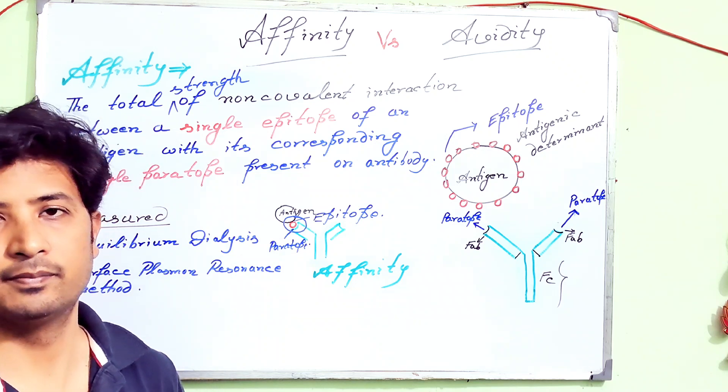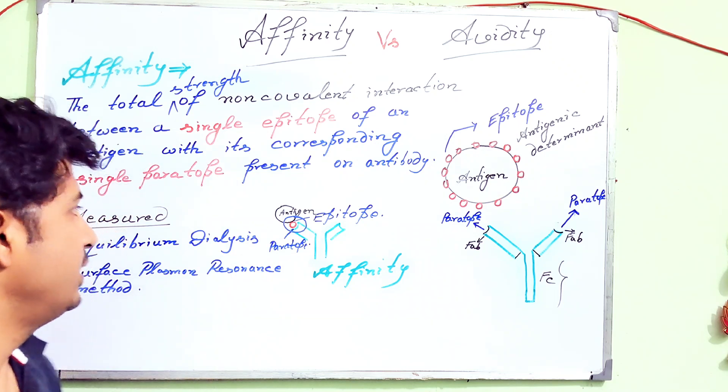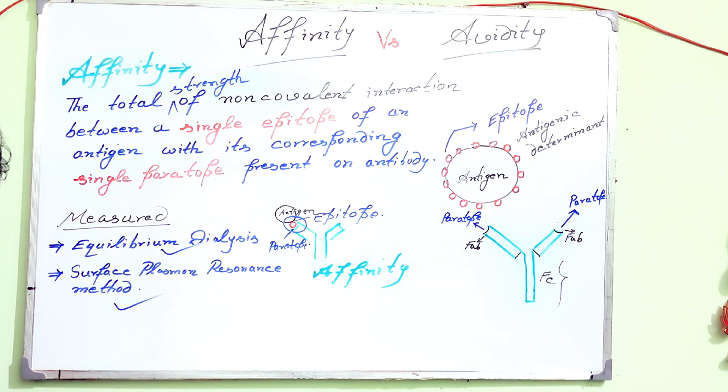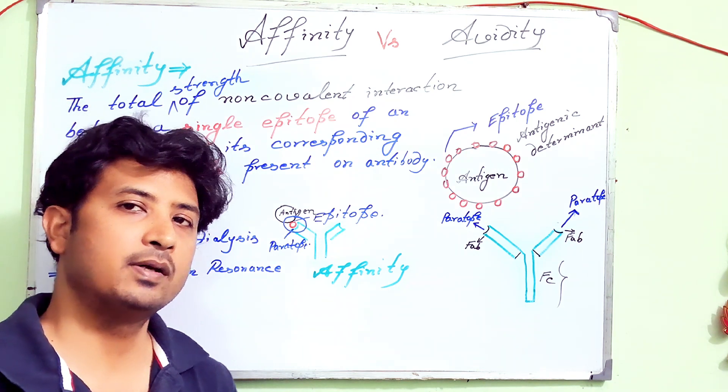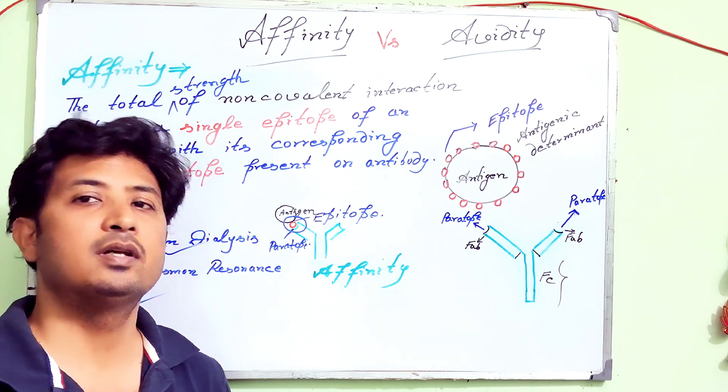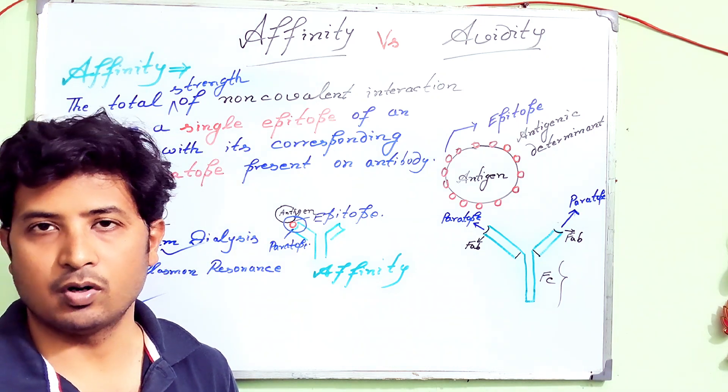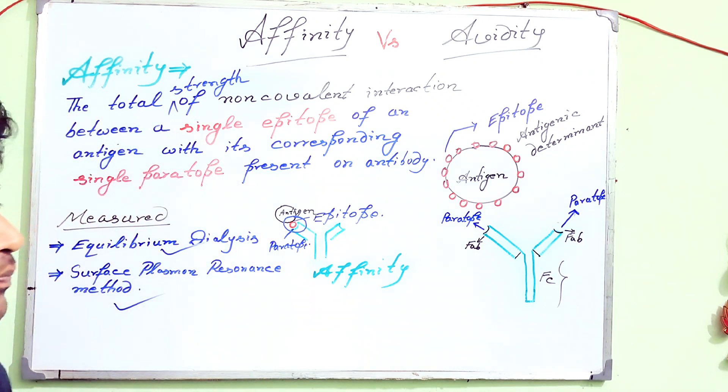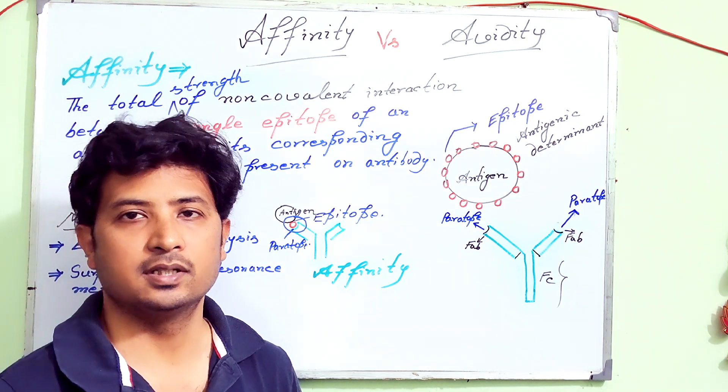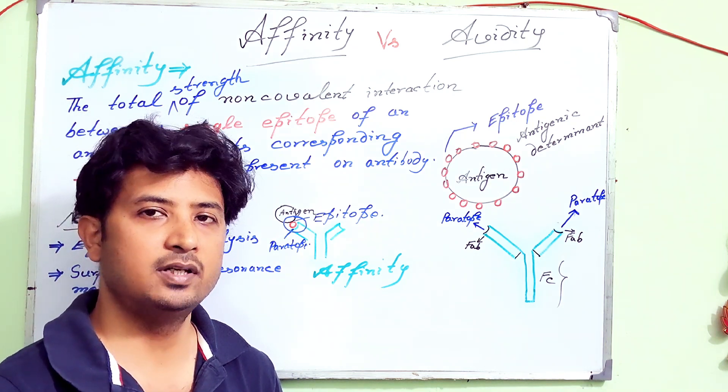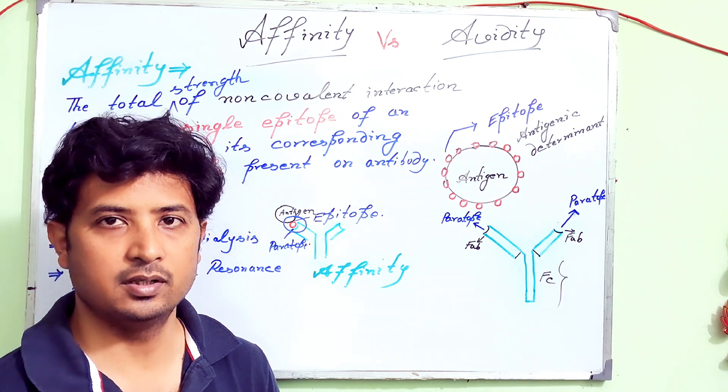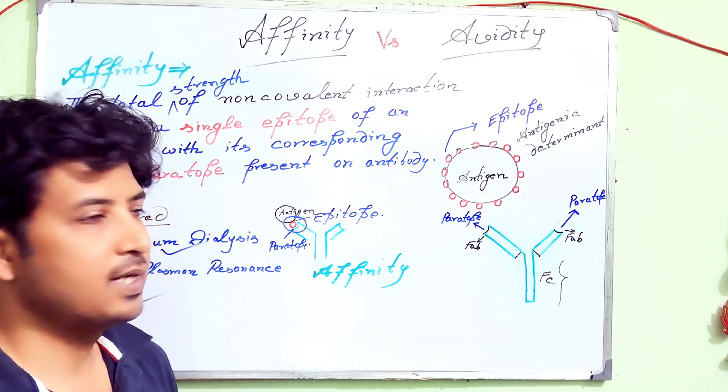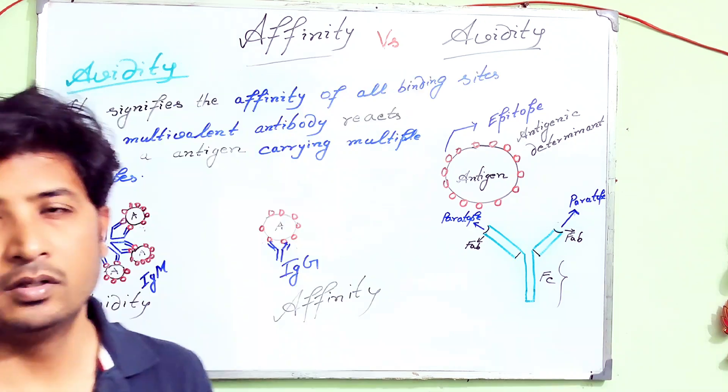Affinity can be measured by equilibrium dialysis method and surface plasmon resonance method. These are the two methods through which you can measure a particular affinity of an antigen towards its cognate antibody or the antibody towards its cognate antigen. Now we will be observing avidity. What is the difference between antigen affinity and avidity, and why is avidity very important?